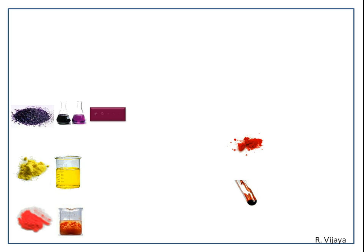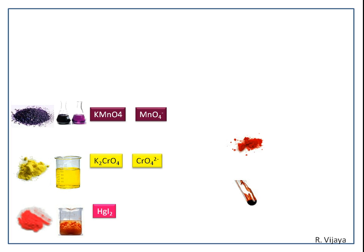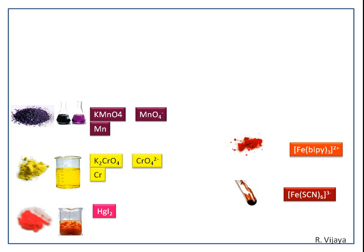In this video we see some beautiful, very intensely colored compounds. The first compound is potassium permanganate, the second is potassium chromate, the third is mercury(II) iodide, the fourth is the tris-bipyridine iron(II) complex, and the fifth is the hexathiocyanate iron(III) complex. In potassium permanganate, manganese is the central metal atom; in the second, chromium; in the third, mercury.